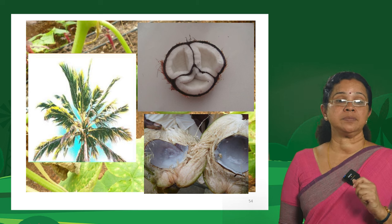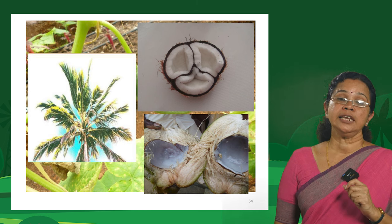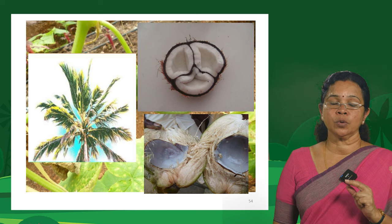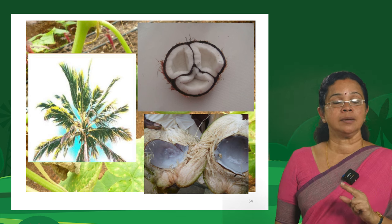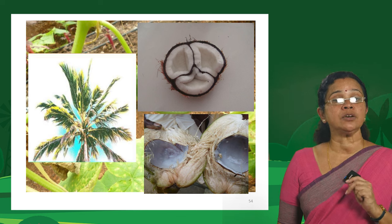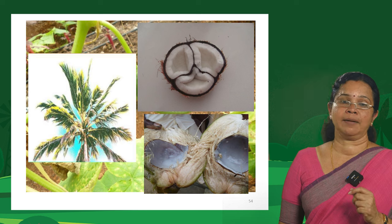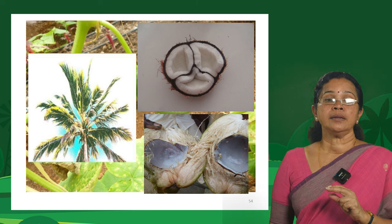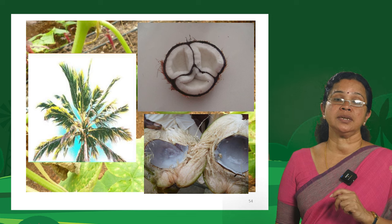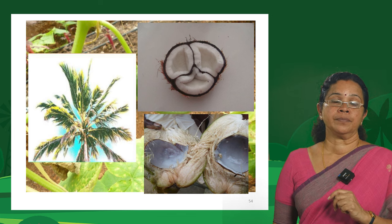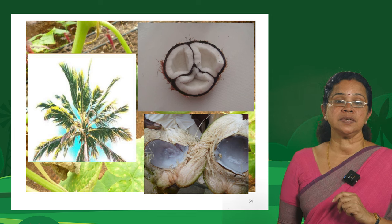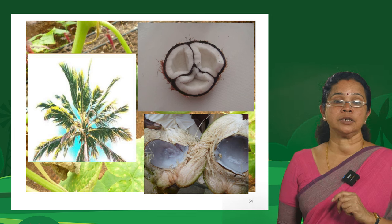In coconut, boron deficiency shows three symptoms: the leaves do not split — normally the leaflets split, but here there is a lack of splitting and it looks like a fan. In extreme cases, the nuts get affected. In banana and other crops, it is the terminal bud that gets affected in all cases of boron deficiency.